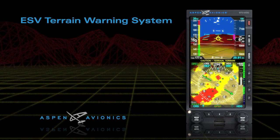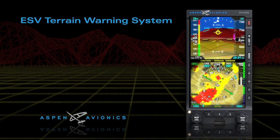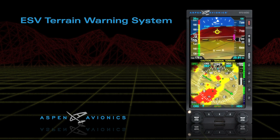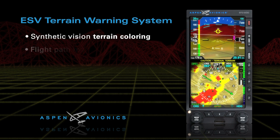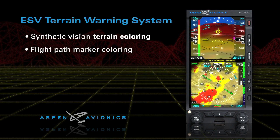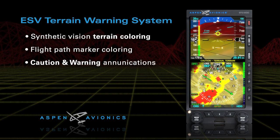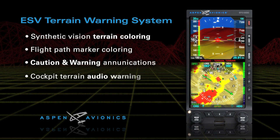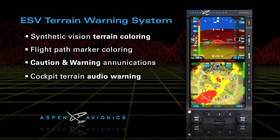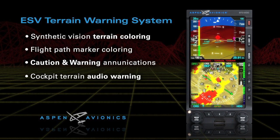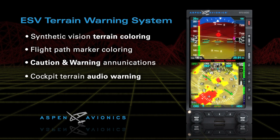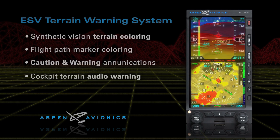Aspen's ESV also has a built-in terrain warning system, combining the use of synthetic vision terrain coloring, flight path marker coloring, caution and warning text enunciations, and a cockpit terrain audio warning signal. The terrain warning system alerts the pilot when terrain or obstacle conflict is imminent.